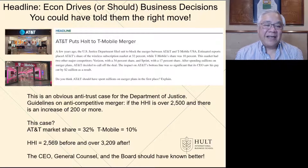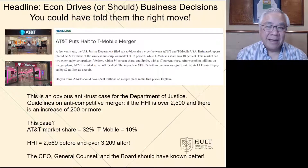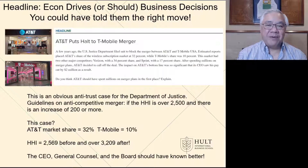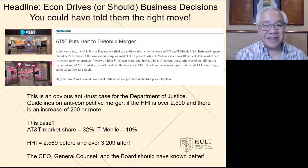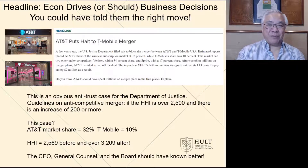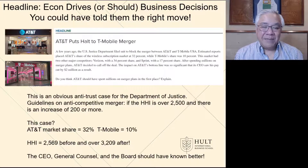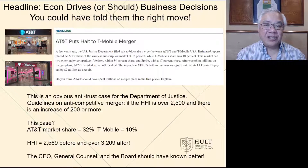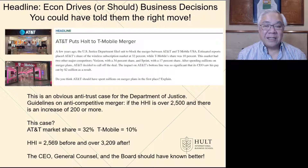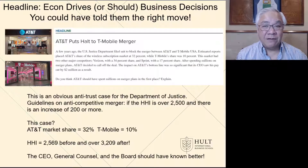Going back to the headline we saw earlier with AT&T and T-Mobile — someone should have raised their hand at AT&T and asked, why are we doing this? Because if you did just one of the measures, let's say HHI, you would have seen that the HHI index here would have been over 2,500, which is the guideline for antitrust.